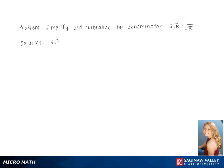To simplify 3 square root 8 multiplied by 1 over the square root of 5, we start by breaking down 8. This gives us 3 times the square root of 2 times 2 times 2 times 1 over square root 5.